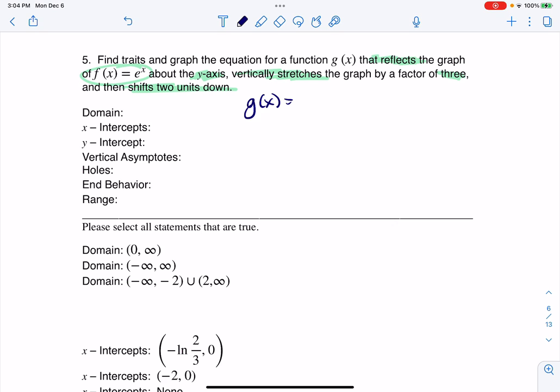The first thing we have to take into account is reflecting a graph over the y-axis, and you do that when you put in a negative x in that argument, in that function. If we're going to vertically stretch the graph by a factor of three, you're going to have a multiplier of three on the outside. And then if you're going to shift two units down, you're going to subtract two on the outside, meaning outside of the grouping symbols.